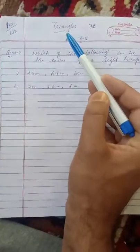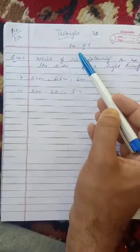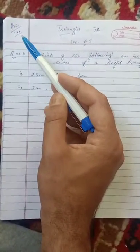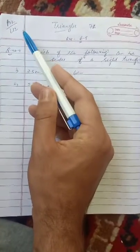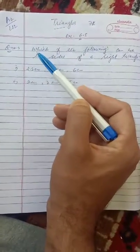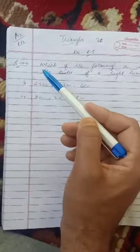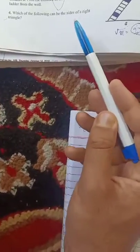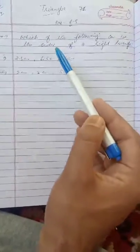Assalamu alaikum dear viewers, hope you are all fine. This is the seventh class of mathematics, chapter Triangle, Exercise 6.5. This is a series of lectures, this is lecture 12, page number 22. This assignment is complete in the textbook, page number 174, question number 14: Which of the following can be the sides of the right triangle?